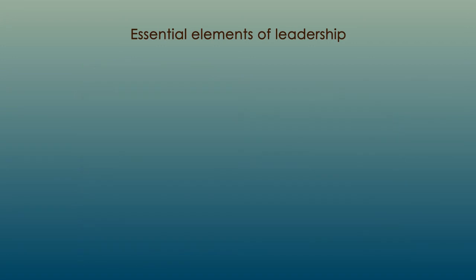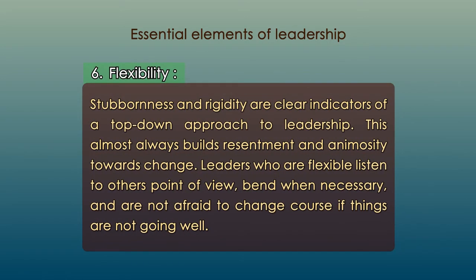Number six: flexibility. Stubbornness and rigidity are clear indicators of a top-down approach to leadership, which almost always builds resentment and animosity towards change. Leaders who are flexible listen to different points of view, bend when necessary, and are not afraid to change course if things are not going well.